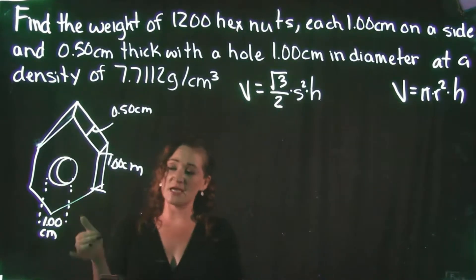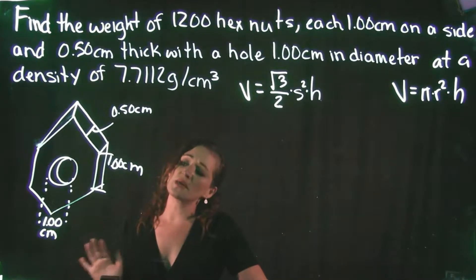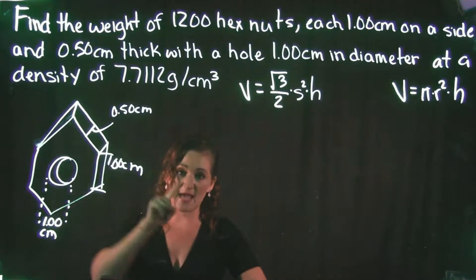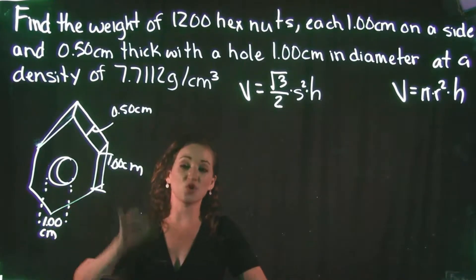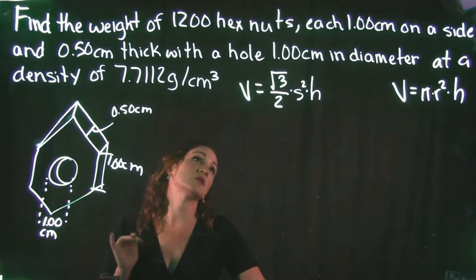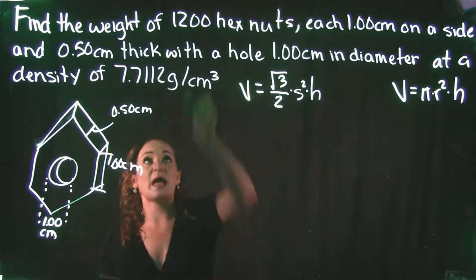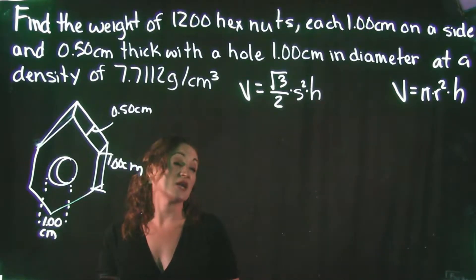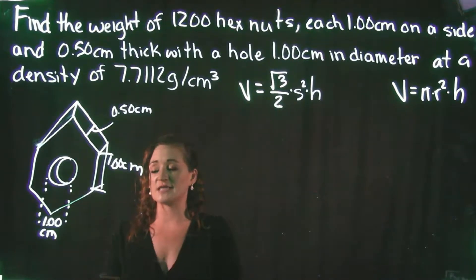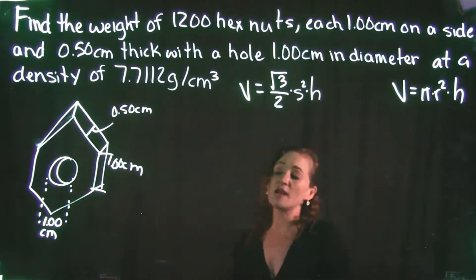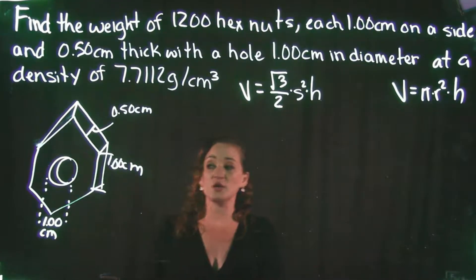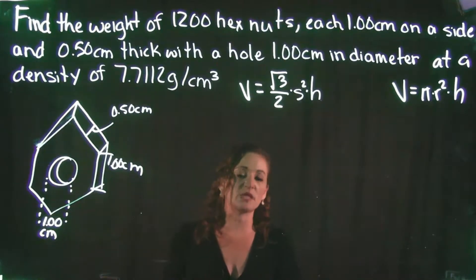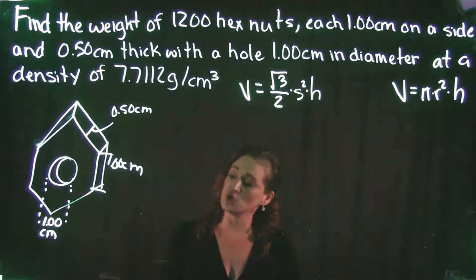This is what a hex nut looks like. We're going to find the volume of one hex nut, calculate its weight, and then multiply by 1,200. There is no single formula for the volume of a hex nut, so we need to break this down using formulas that we do have.